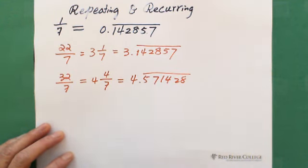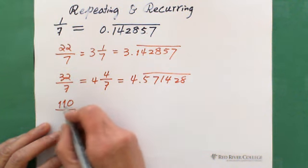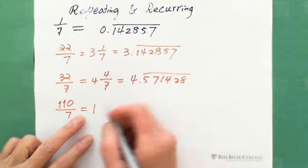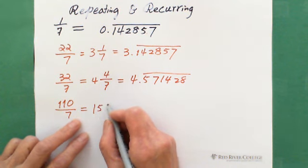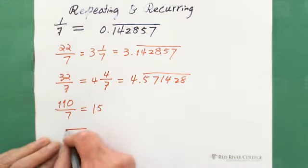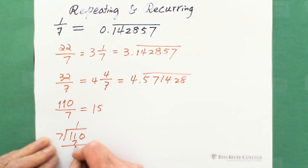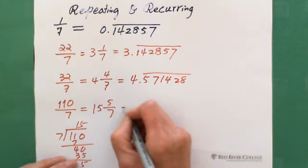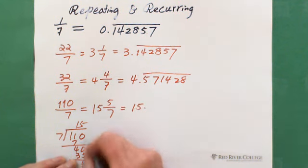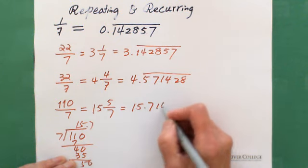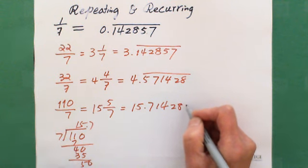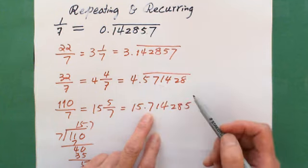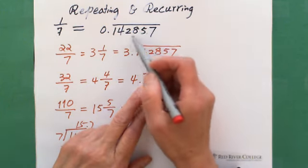We can also try a three-digit example: 110 divided by 7. The integer part is 15, since 11 divided by 7 is 1 with remainder 4, and 40 divided by 7 gives 5 with remainder 5. That remainder 5 gives us 5 over 7. For 5 over 7, the first digit is 7, so starting from 7: 7, 1, 4, 2, 8, 5. Always follow this order — if you start at 7, go 7, 1, 4, 2, 8, 5; if you start at 5, go 5, 7, 1, 4, 2, 8.